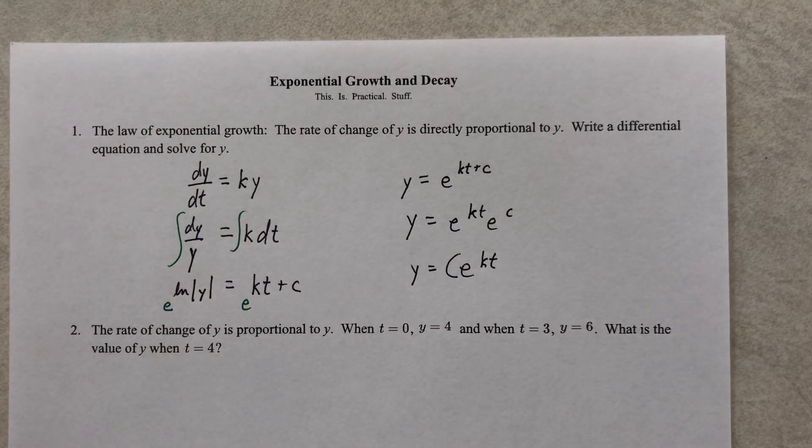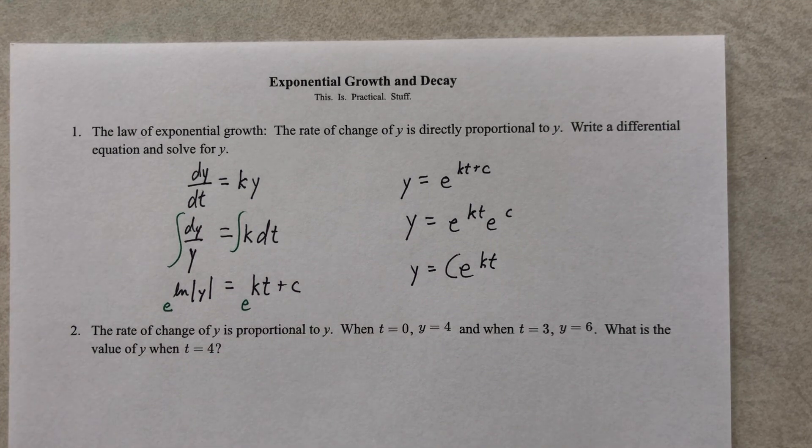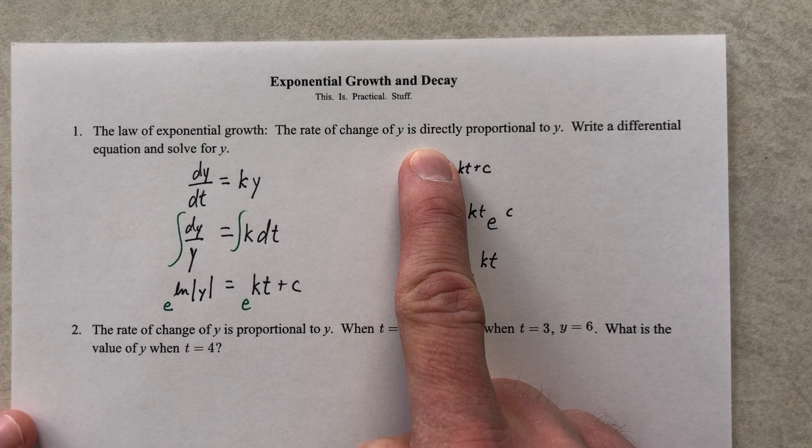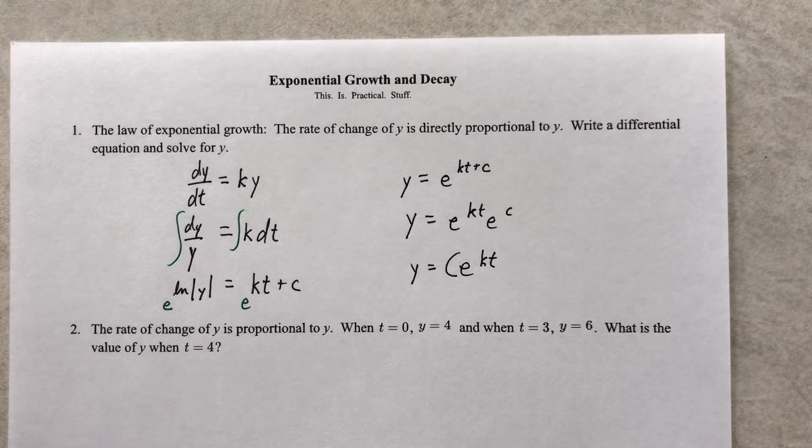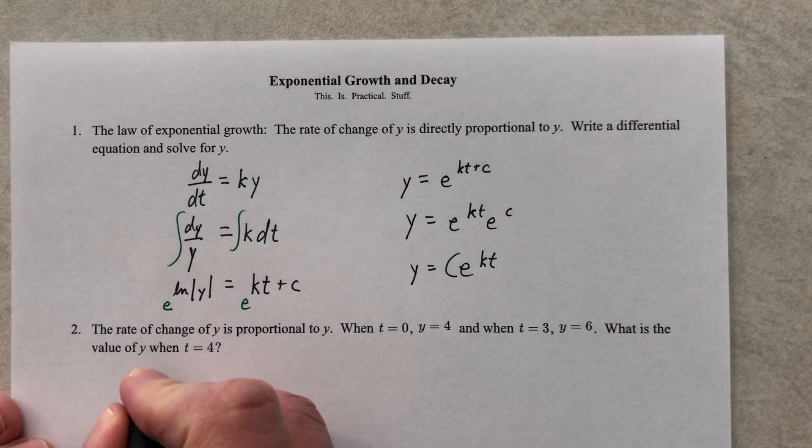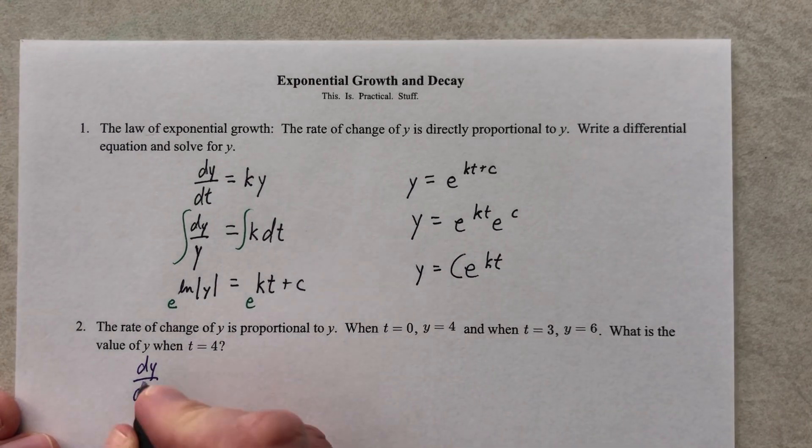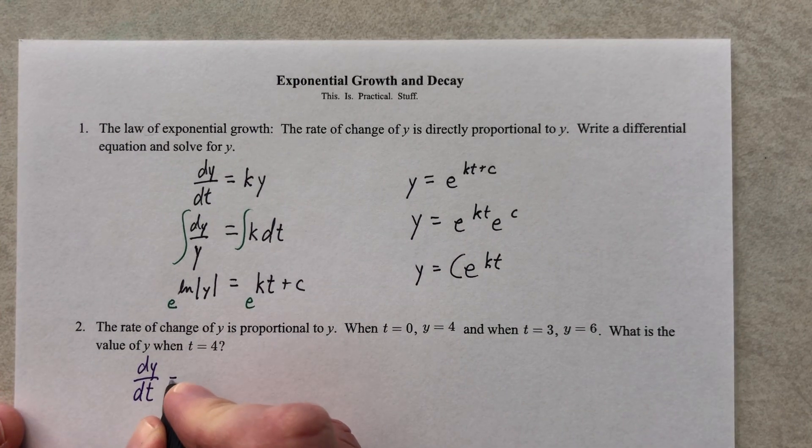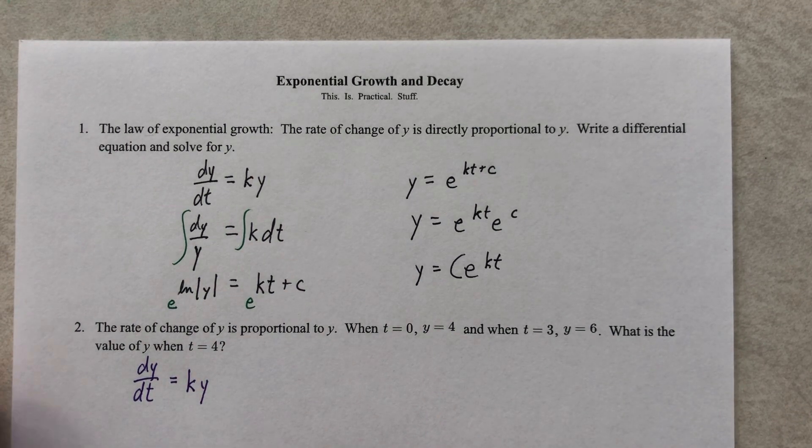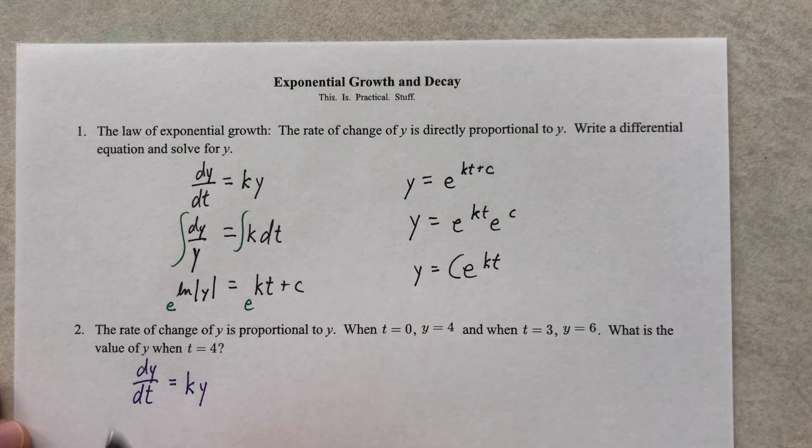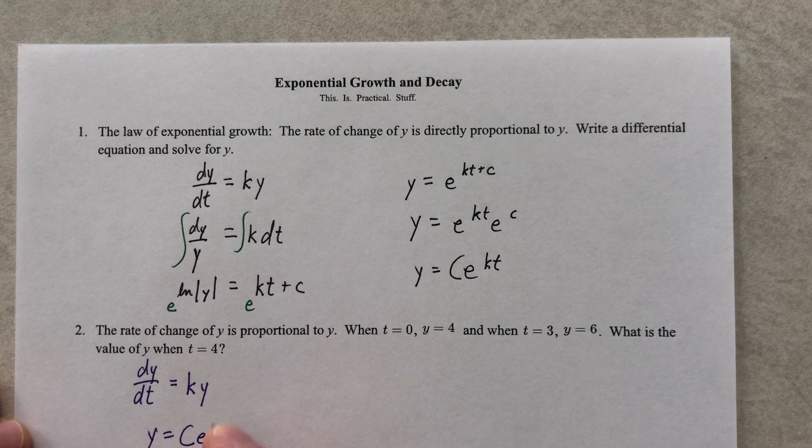We are going to work on the second problem in these notes, and it says the rate of change of Y is proportional to Y. So that sentence gives it away. The word directly is missing, but it's the same idea and structure. This all leads to Y equals Ce to the kt.